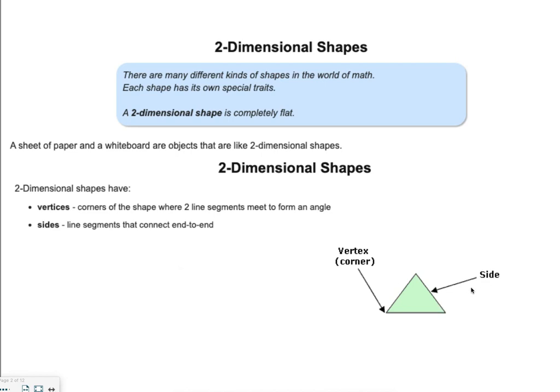The triangle also has sides. It has three sides. And this is where your line segment connects to another line segment. The types of shapes that we're going to look at when we talk about two-dimensional are defined by the number of sides and angles that they possess.